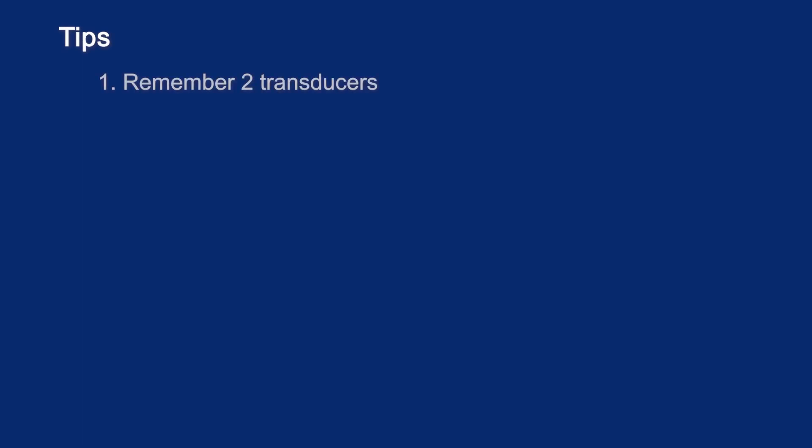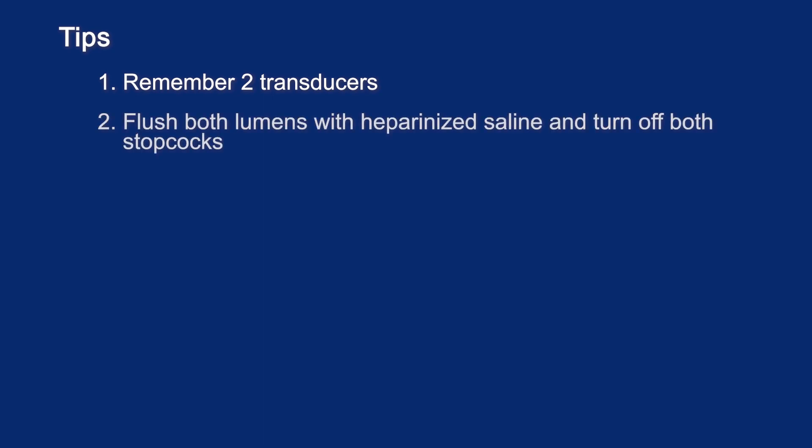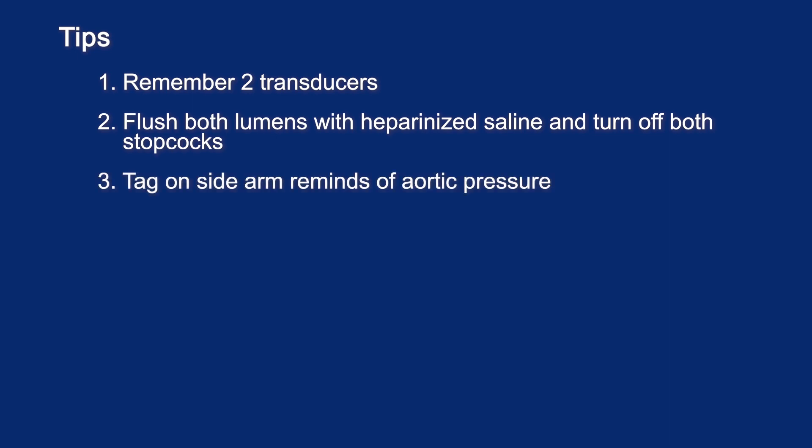These tips may help ensure a successful procedure. All Langston devices require a second transducer. Make sure to flush both lumens with a heparinized solution and turn the stopcock off before inserting the catheter into the introducer sheath. If blood is drawn into either lumen, that lumen should be flushed immediately — not doing so could result in clot formation. When placed appropriately, the outer lumen measures the pressure proximal to the valve. The Langston catheters have a tag marked AO on the sidearm to remind the user that it is the aortic pressure.